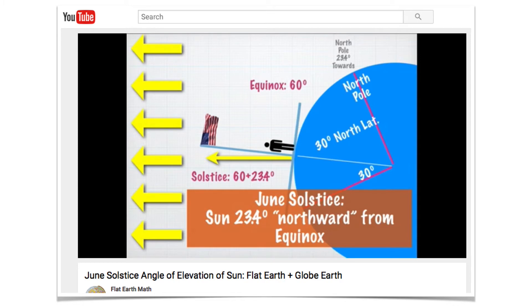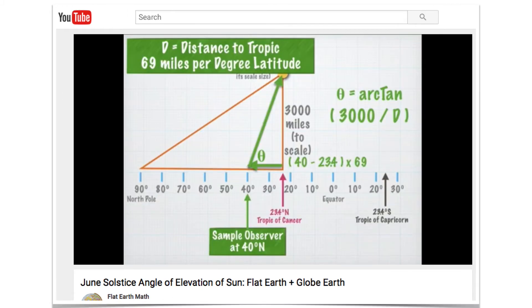So again, just to remind you, in the globe earth model, the north pole is tilted towards the sun at 23.4 degrees. So that's going to change our angle of elevation of the sun to be 23.4 degrees northward from whatever the reading was going to be on the equinox. Meanwhile, on the flat earth map, and this is sort of a side view with the north pole on the left and the tropics on the right, the sun is above the tropic of Cancer, and that's going to affect the angle of elevation as well. And to calculate that angle of elevation, you use the arc tangent.